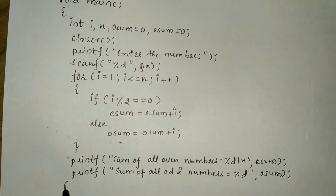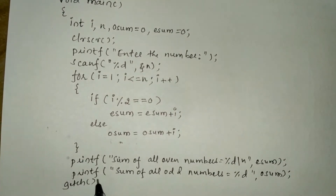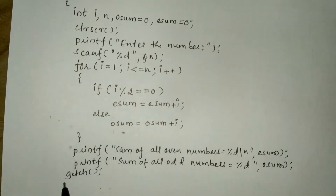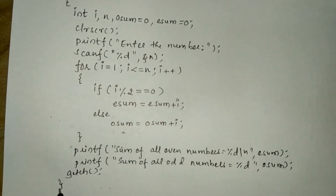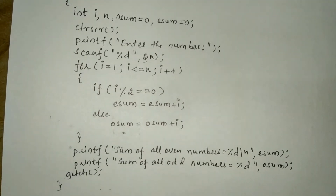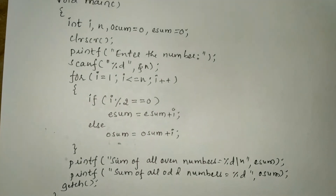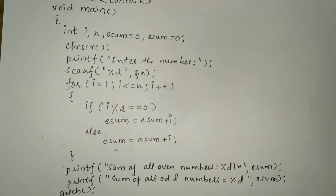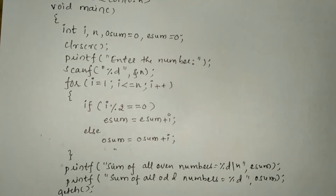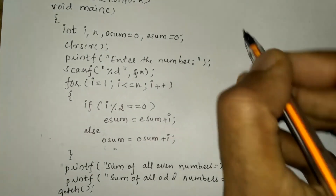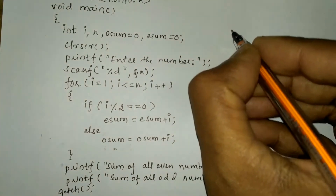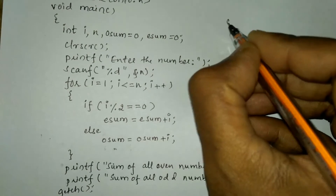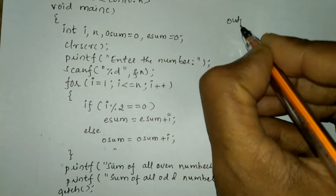Here I am going to write getch and then the curly closing brace. Now let us see an example of how exactly this program works, so here I am going to write the output.